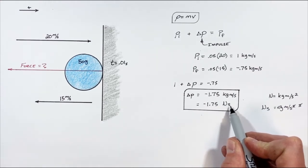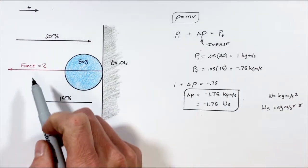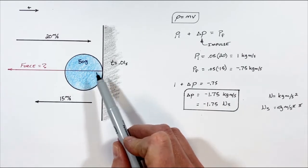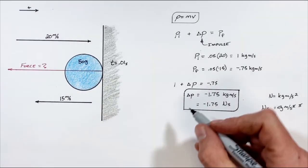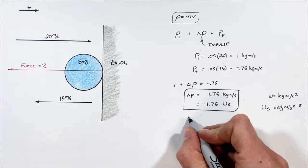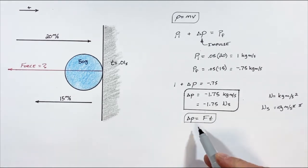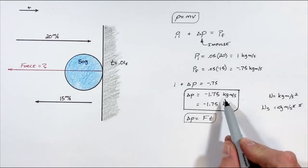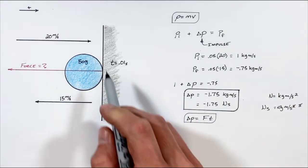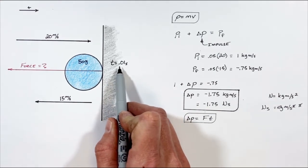Looking at impulse as a Newton-second, or a force multiplied by a time, allows us to solve for the force between the ball and the wall during this collision. Impulse can be given by the equation force times time. So if we want to solve for the total force, we simply need to know the change in momentum (or impulse), which we already solved for, and the elapsed time for this collision.